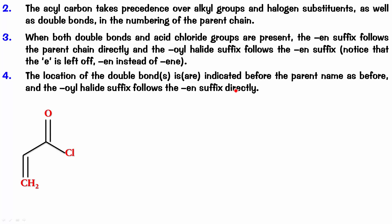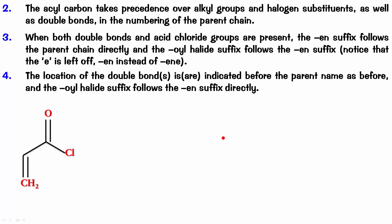Try and name this next example. The parent chain is clear, and here you need the numbering: 1, 2, 3. So it's prop-2-enoyl chloride. Note that you don't strictly have to write the '2' because the double bond cannot be elsewhere anyway — but writing it is also fine. So prop-2-enoyl chloride.